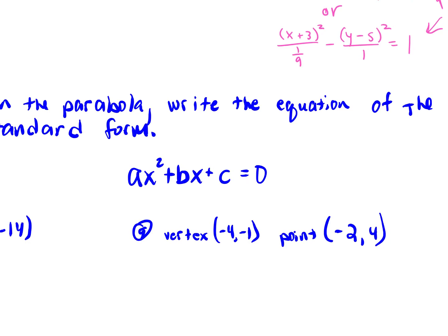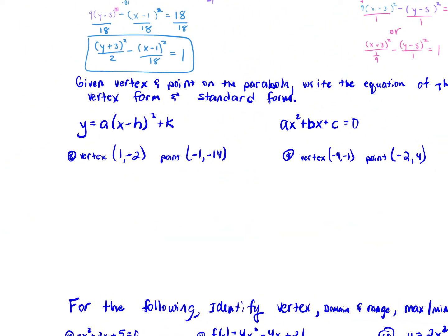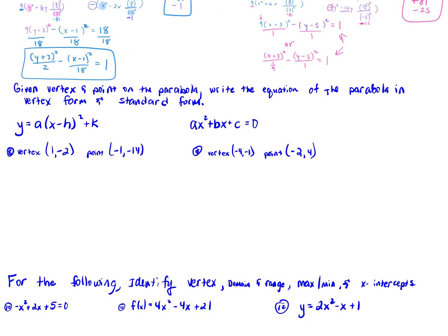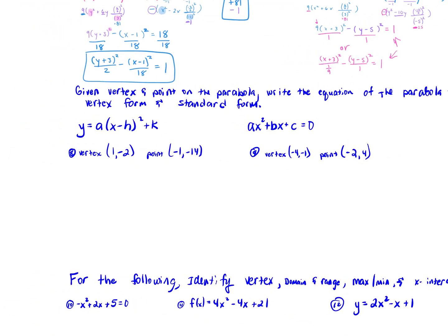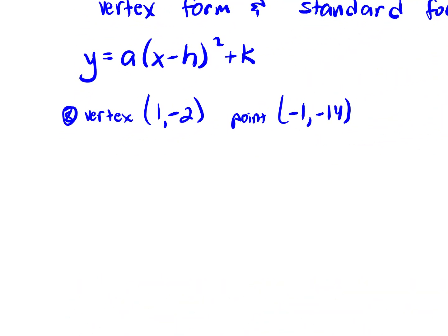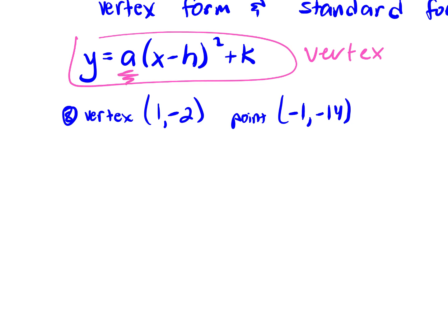Let's take a look at number 8. Given the vertex and a point on the parabola, write the equation of the parabola in vertex form and standard form. We always start by plugging everything into vertex form so we can figure out our a. The vertex 1, negative 2 gives our h and k. The point negative 1, negative 14 gives our x and y.